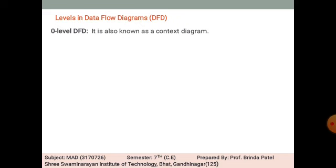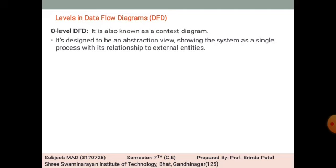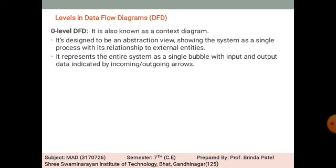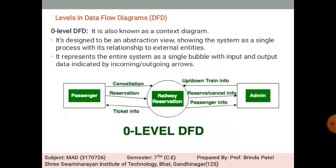0-level DFD is also known as a context diagram. It is designed to be an abstract view, showing the system as a single process with its relationship to external entities. It represents the entire system as a single bubble with input and output data indicated by incoming and outgoing arrows. Here, a railway reservation system example is taken — passenger and admin are the entities used.